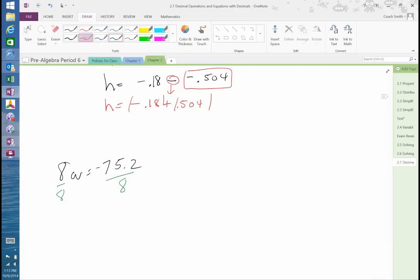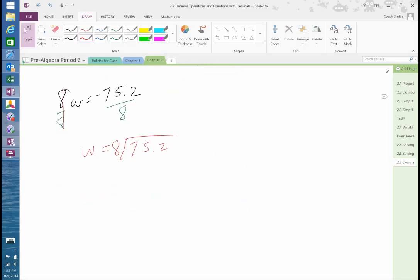Okay, now, so these two cancel. We have w is equal to 75.2 divided by 8. Now, it's okay to have whole numbers on the outside of your division bar or division bracket. You can have a whole number in the divisor, but you can't have decimals. If you have decimals, we have to move it like we did yesterday. But we'll get to that here in a second. This one's got a whole number.